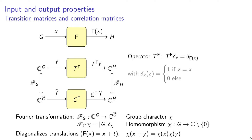And if we take the Fourier transformation, then this matrix Tf should be replaced by a matrix Cf, which is also known as the correlation matrix. So what is the basis we use in the case of the Fourier transform? Well, it consists of group characters, which are homomorphisms from G — which we now assume to be a finite abelian group — to the complex numbers with multiplication.